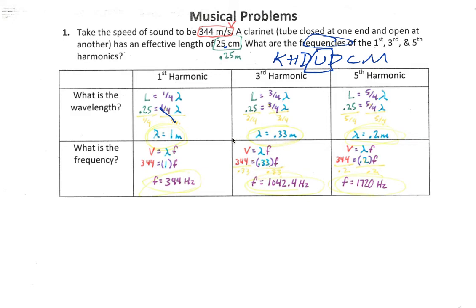Use the only formula that relates velocity, wavelength, and frequency together. So divide both sides by 0.33 so that we can get f by itself. If I do it to one side, we have to do it to the other. And I'm left with 344 divided by 0.33 gives me 1,042.4 hertz. You could round off to 1,042 just as well.